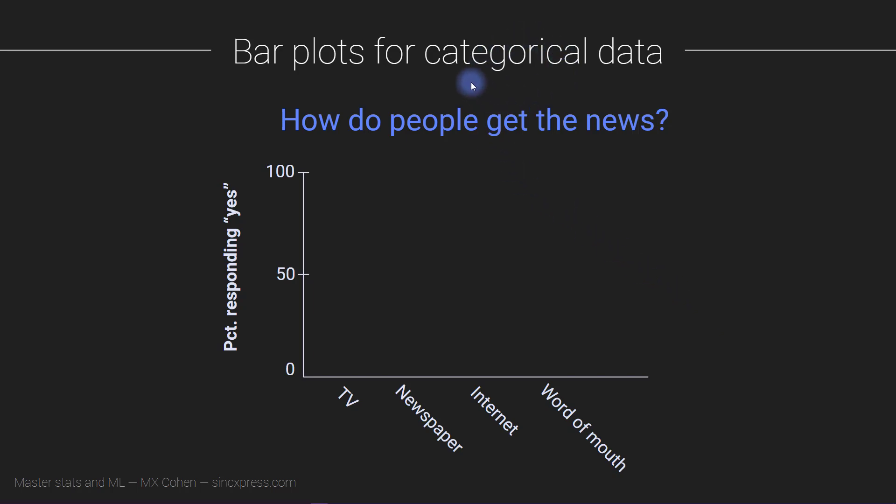Most categorical data are displayed using what's called a bar plot. They're called bar plots because it's a plot with bars in it. Pretty straightforward there. So let's say we survey a bunch of people and ask them how do you get your news, and we report the number of people or the percent of people saying yes to these different types of media.